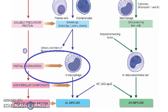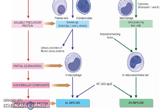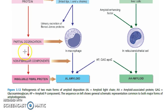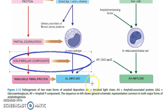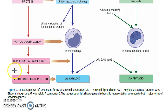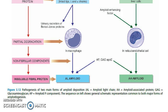Now what will happen? There is partial degradation by the macrophage. However, they survive all this and then there is deposition. The non-fibrillar components then come in and stabilize the deposit, and the insoluble fibril protein — that is amyloid, AL amyloid — is formed.